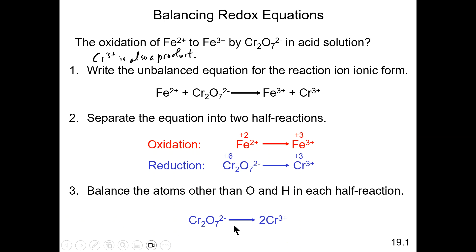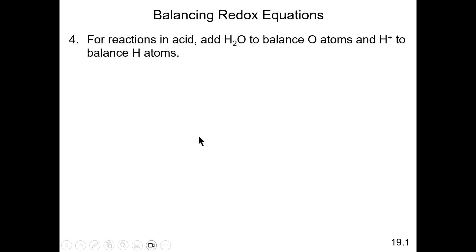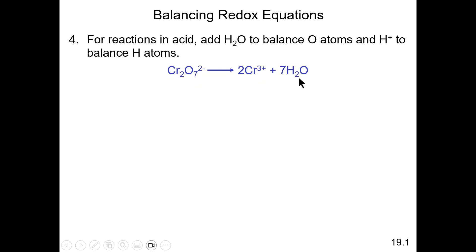In some cases you may need to balance atoms in both half equations, but in this particular case we don't need to because it's already balanced. Now the next step involves balancing the oxygens and hydrogens. For reactions in acids — and this is very important — we add water to balance the oxygen atoms, and we add hydrogen ions to balance the hydrogen atoms. We have 7 oxygens on the left side, so we need to add 7 water molecules to the right side.